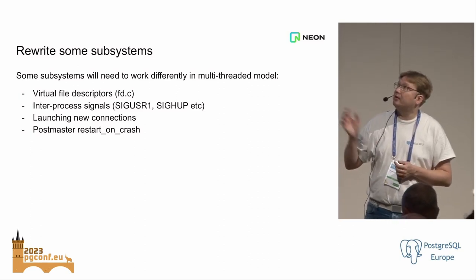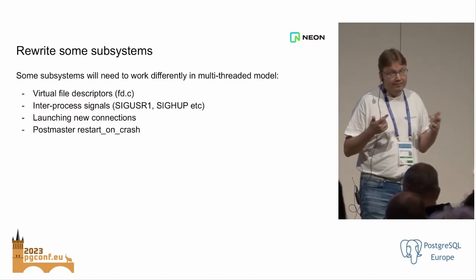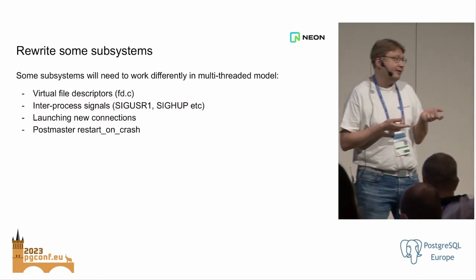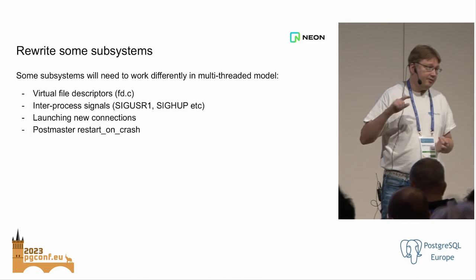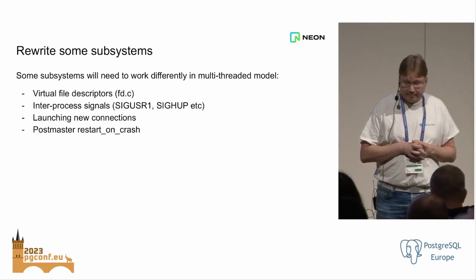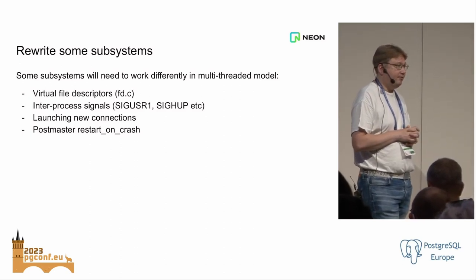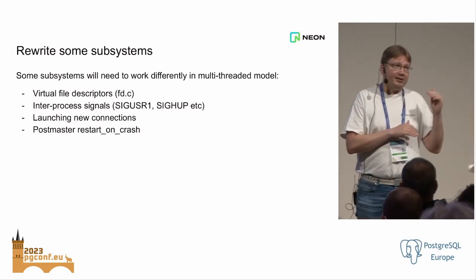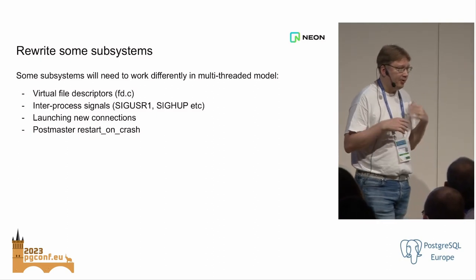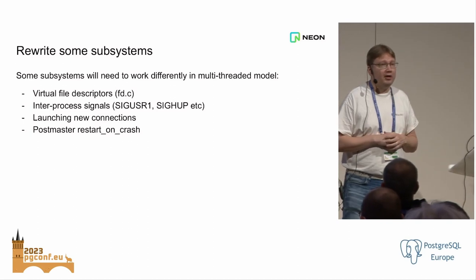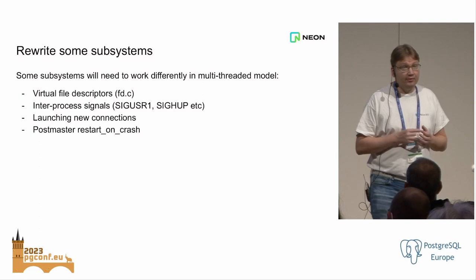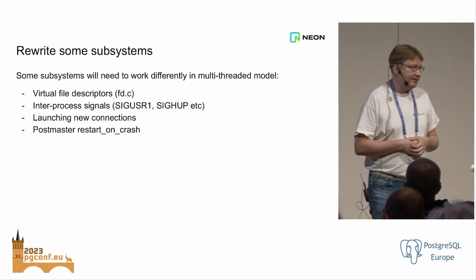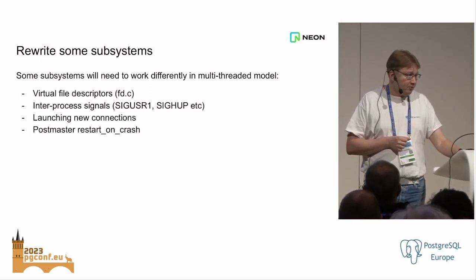One interesting case is the restart-on-crash. When Postgres crashes today — if one of the processes crashes — the Postmaster process notices that the child process died unexpectedly, kills all the other processes, waits for them to die, and then restarts the system. That's not really safe if we just switch to a multi-threaded architecture, because currently the Postmaster process is very independent. It doesn't modify the shared memory or shared state except in very limited ways — its only purpose is to accept connections and watch for other processes to die and make sure they get restarted cleanly. So I think we'll need to still have one extra process — the Postmaster — to monitor the process that's actually doing all of the work.